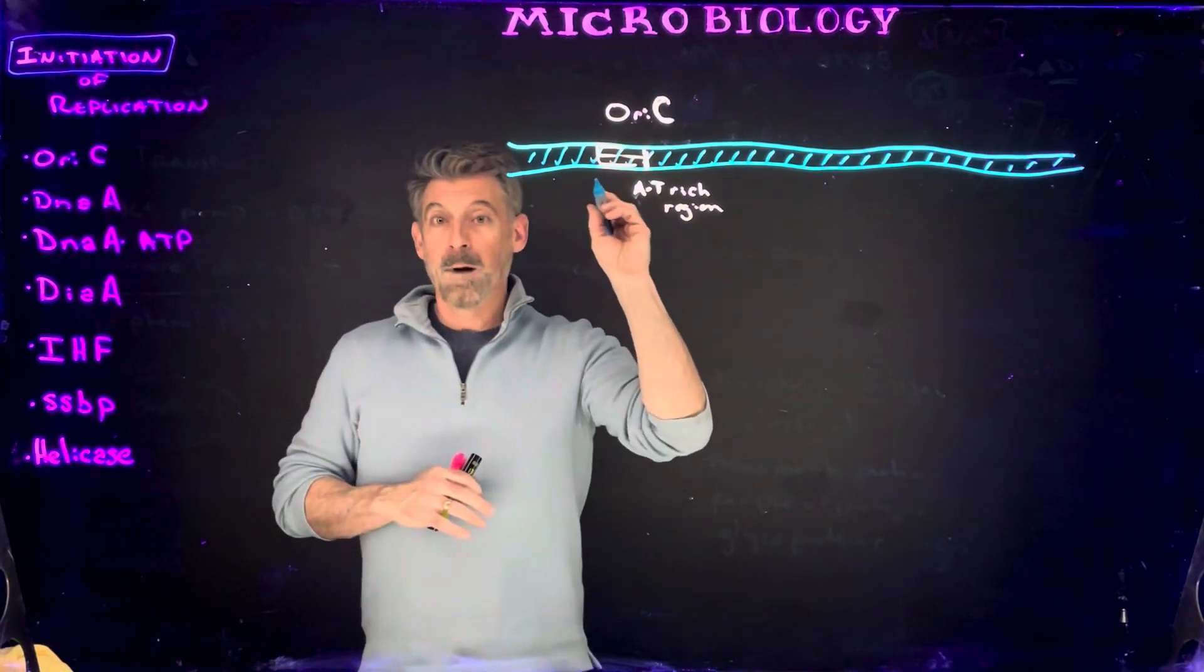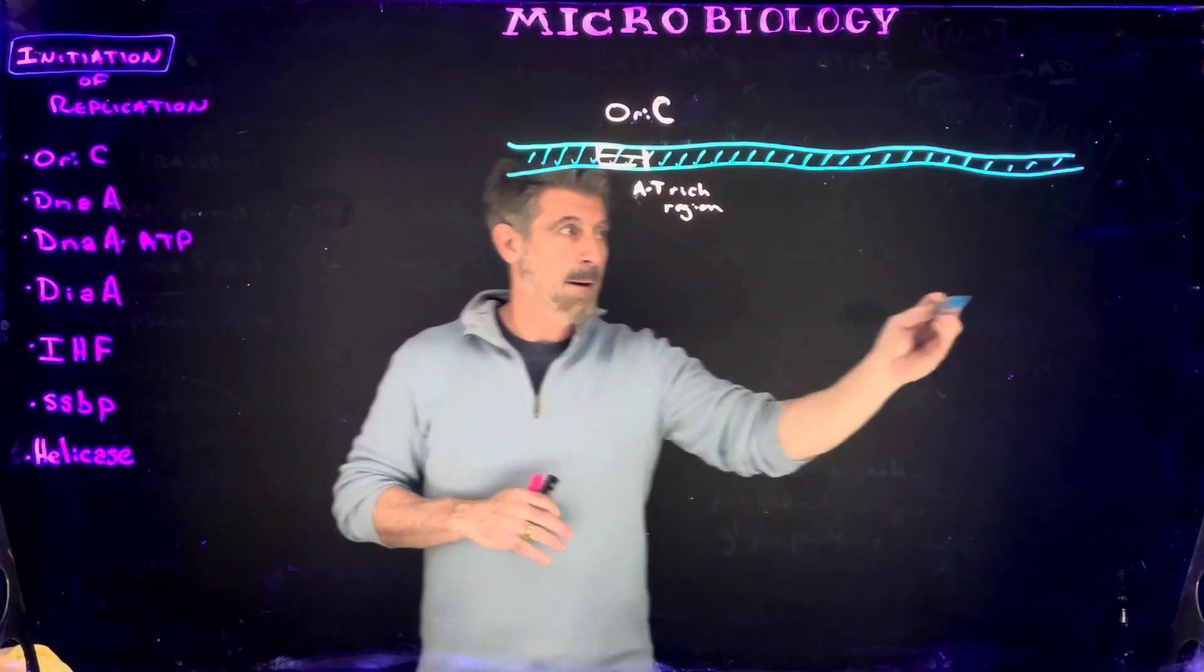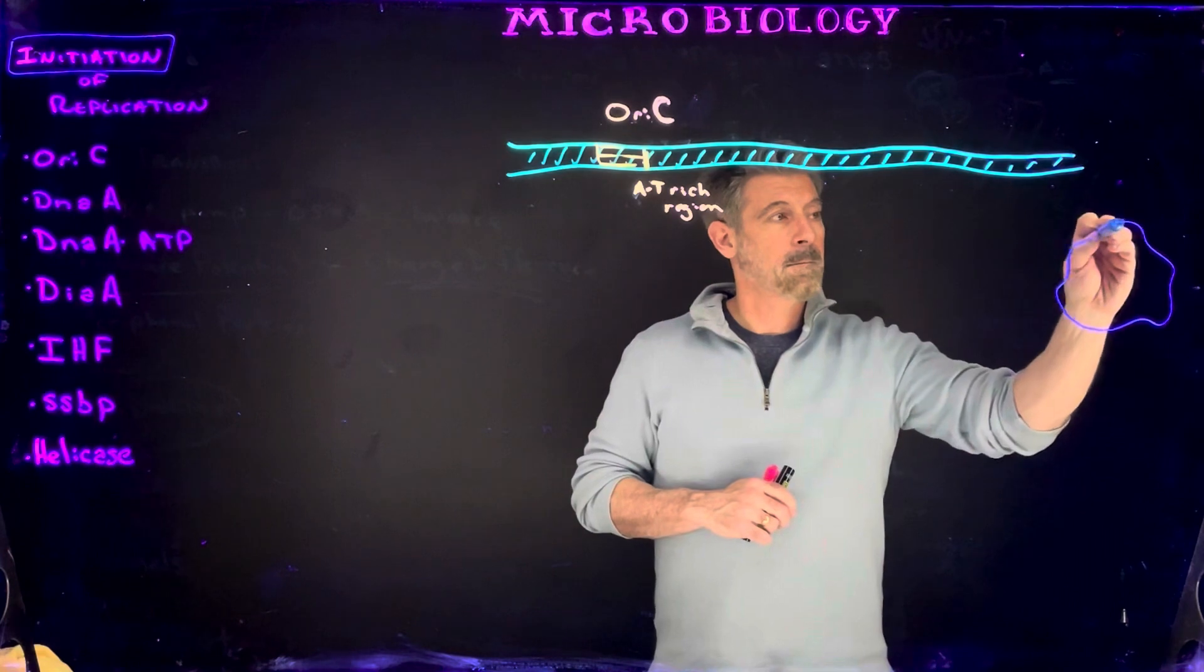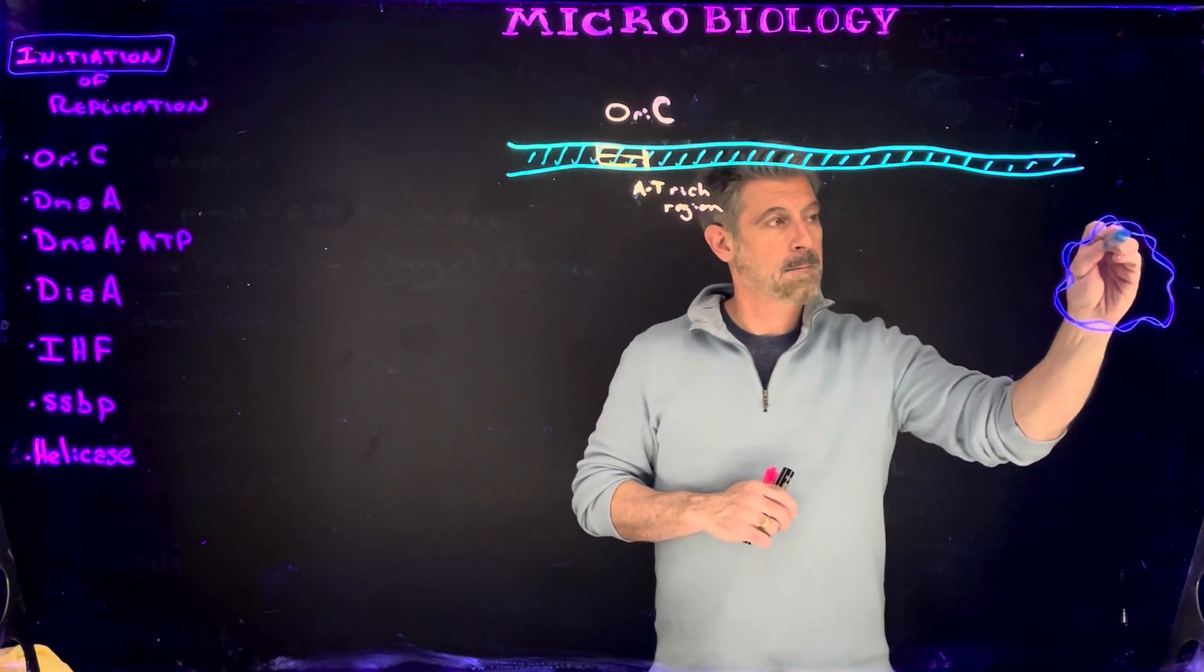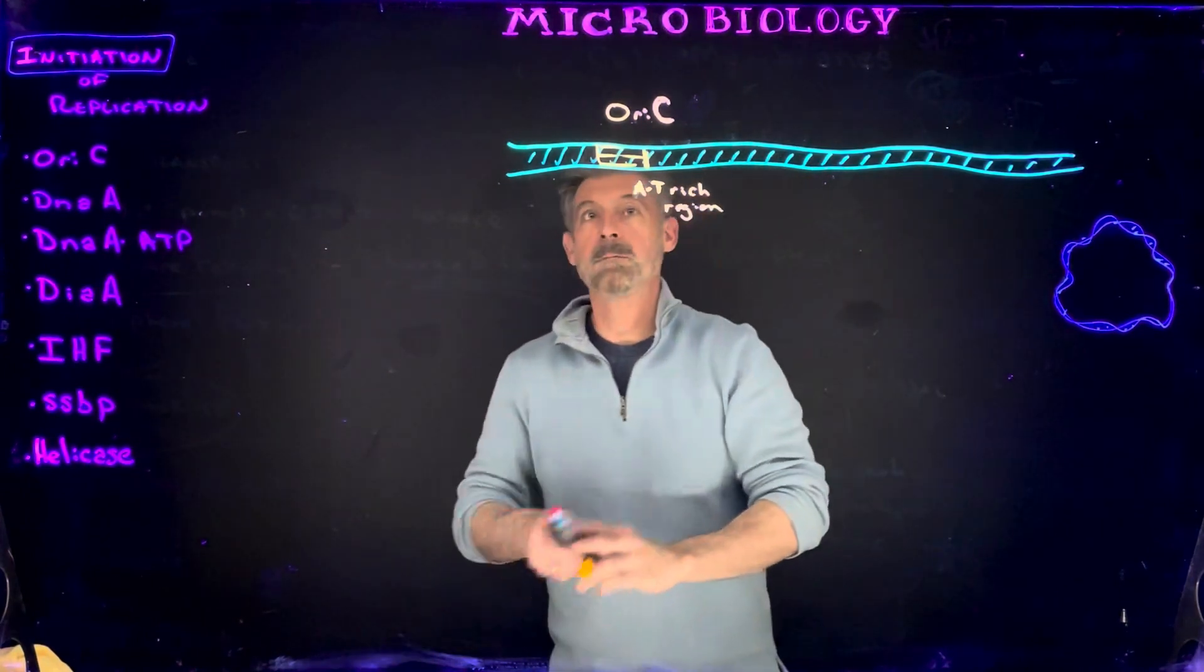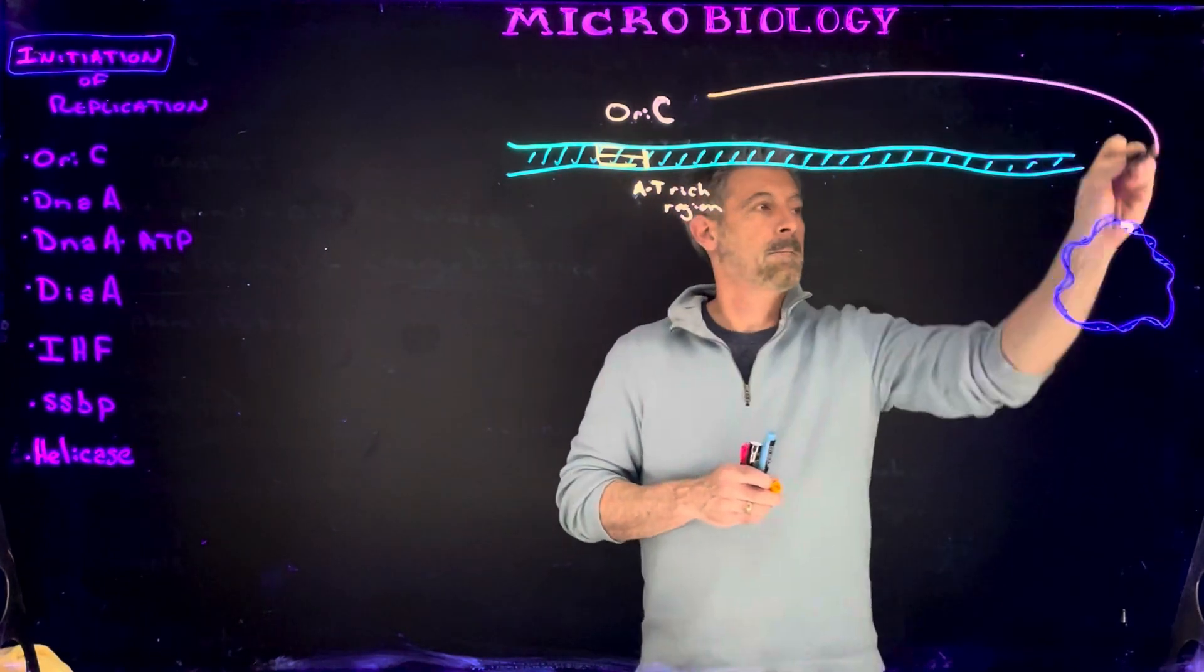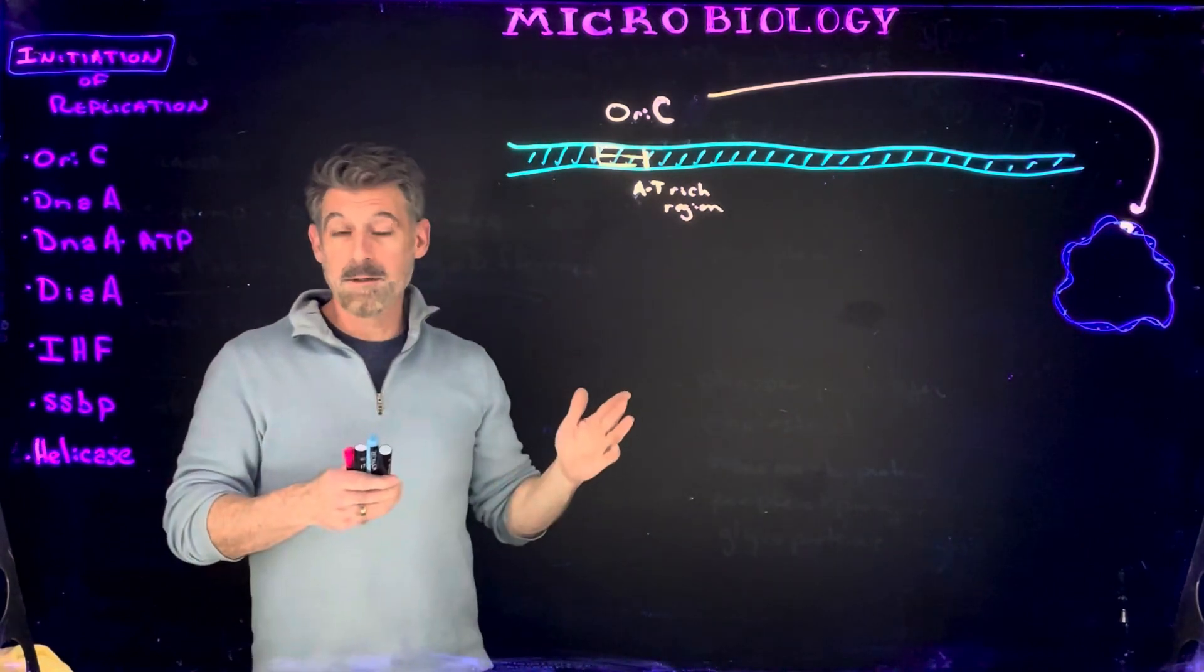So replication begins at an area of the DNA. A bacterial genome is circular. So we have a single chromosome, and it's a circular chromosome, and we have our oriC located in just typically one particular area.